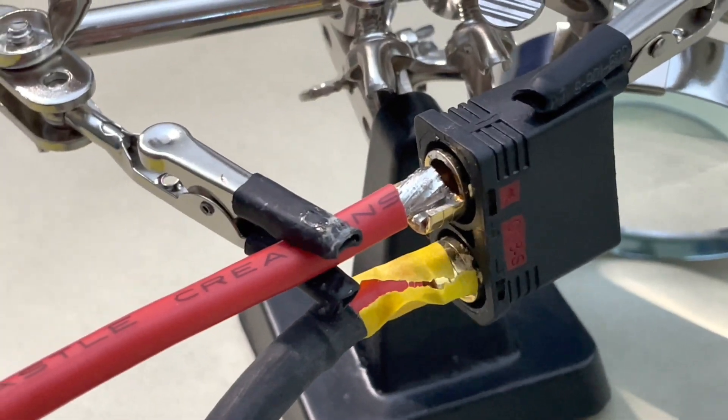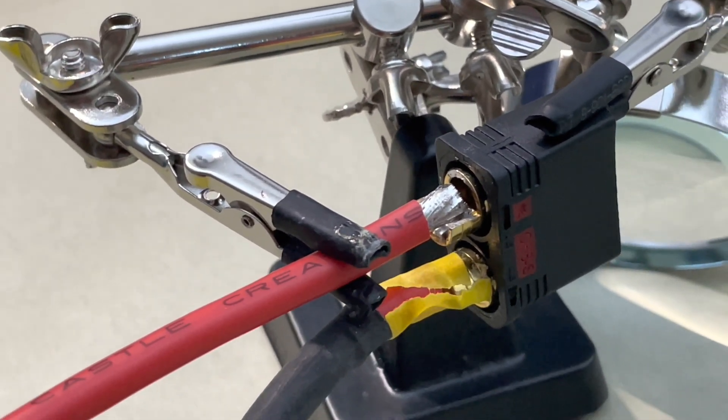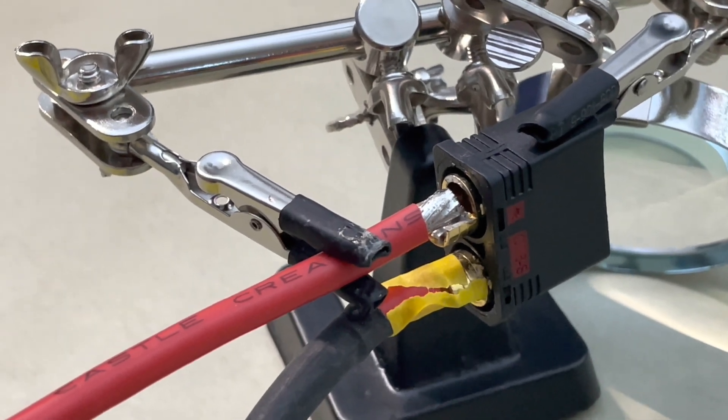Versus when you're soldering on like we're going to do now, adding solder to the soldering post, you're warming it up and then adding solder to the wire, you're warming it up separately. And then when you go to solder them together, both of them are already preheated and it takes a lot less heat for everything to fuse together.